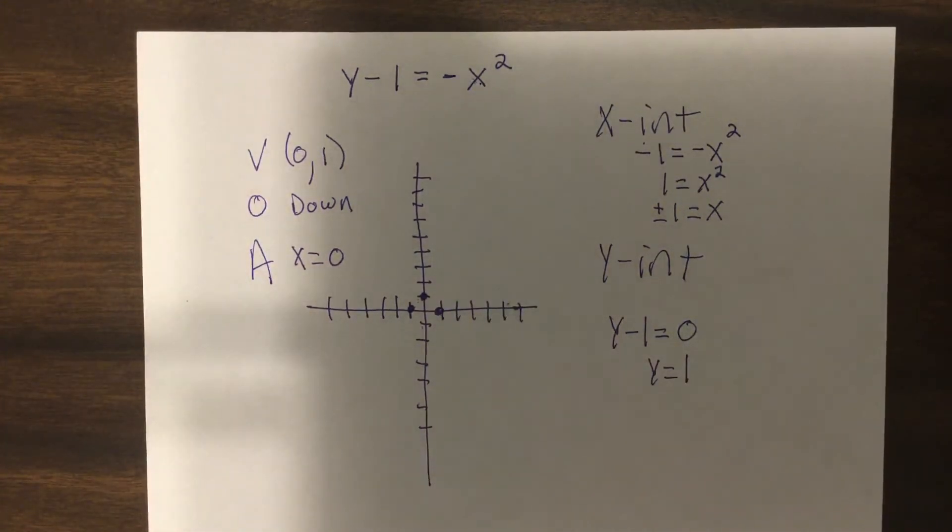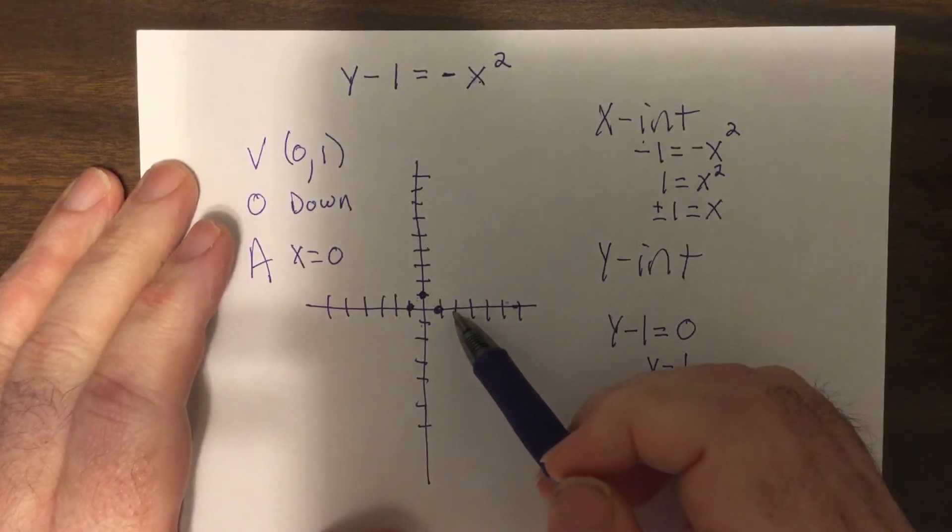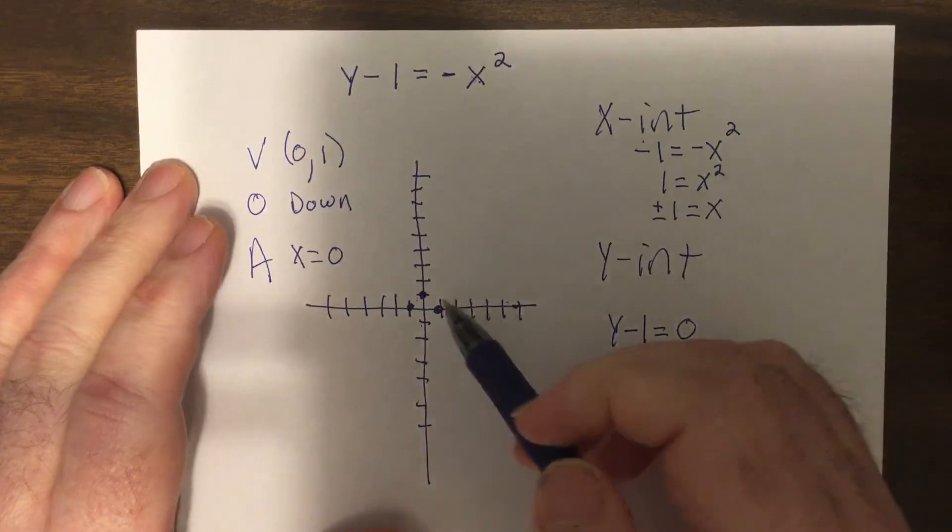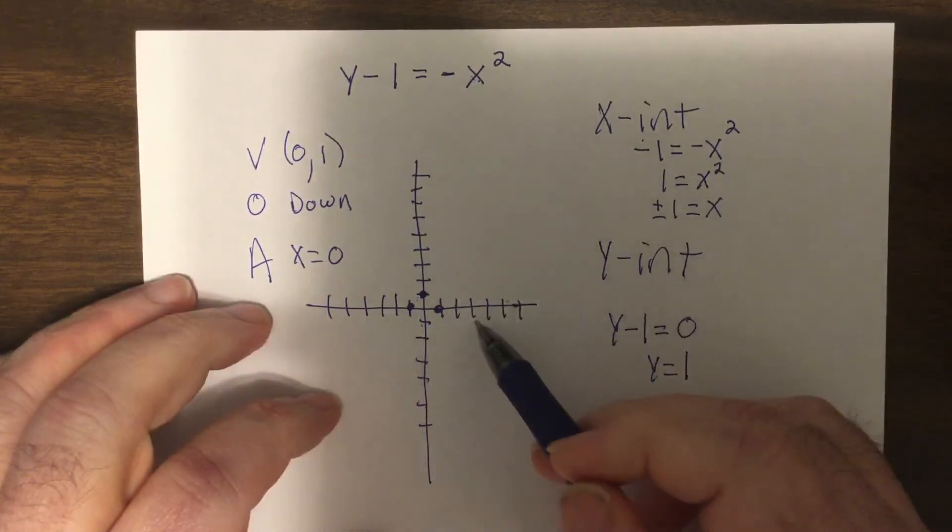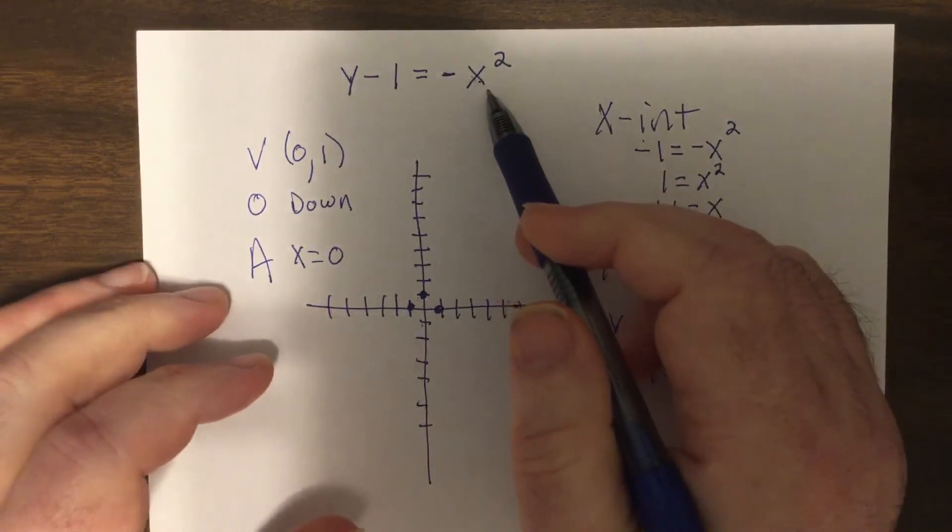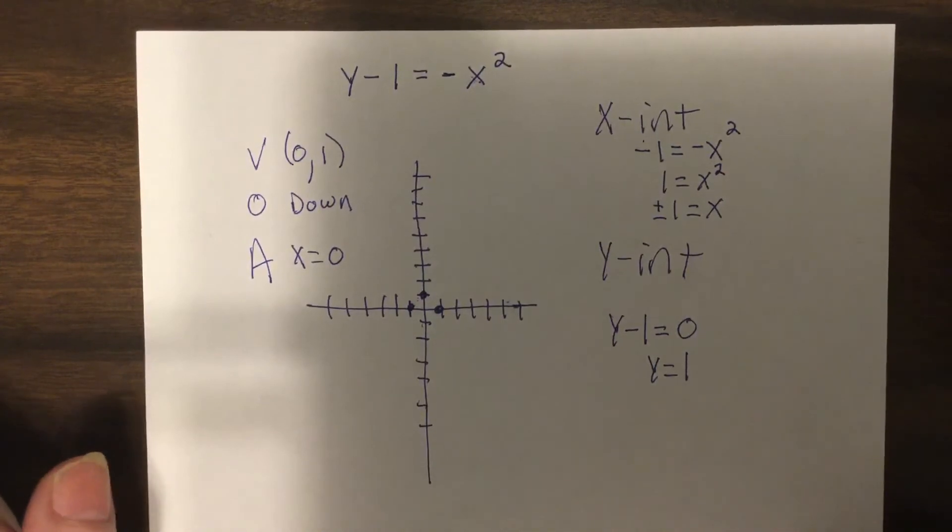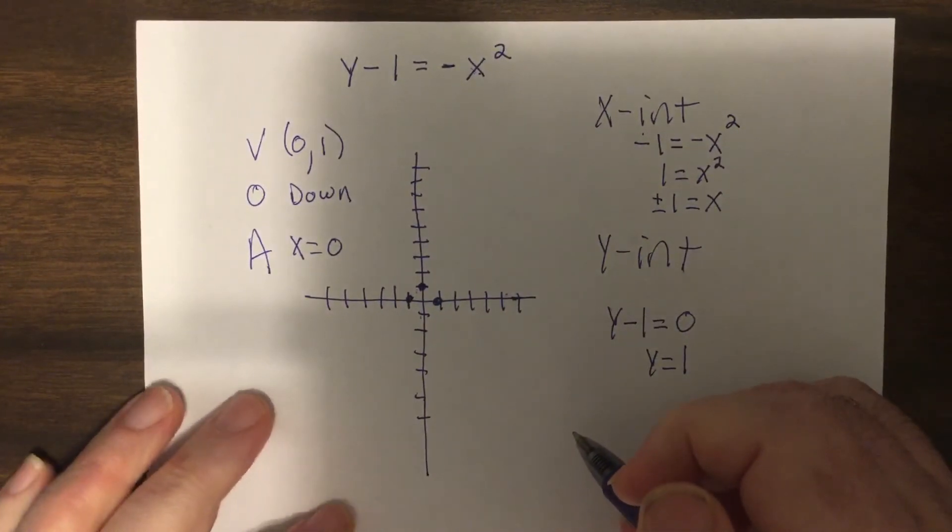So now we're going to do the ever popular plug and chug. So what I'm going to do is take a point, let's start over. I'm going to put a number in for X to find a point is what I'm trying to say, but try to pick one close to the vertex. I'll see kids choose like 20. Well, 20 squared is 400. Do you want to plot a negative 400? Mercy. Let's change that.